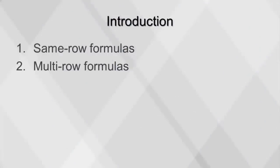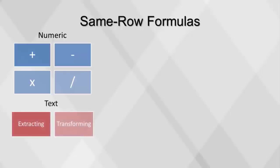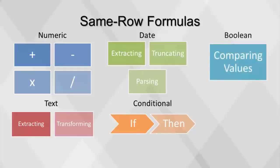This video will cover two types of formulas: same row and multi-row. A commonly used method of data preparation is using existing fields to create new variables. Examples include adding, subtracting, multiplying, dividing, or applying another mathematical function to a numeric field; extracting and transforming substrings from a text field; extracting, truncating, and parsing date parts from a date field; conditional statements using if-then and binning to create new variables; and comparing values of two different fields to create a boolean variable.